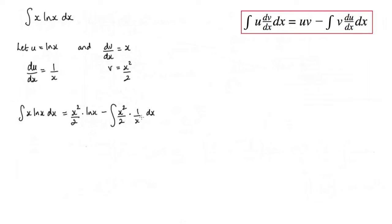Now clearly I can cancel this x with one of these. So I have x squared over 2 log x minus the integral.